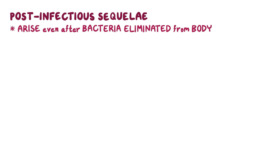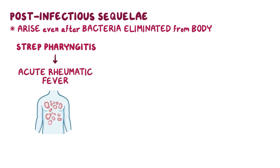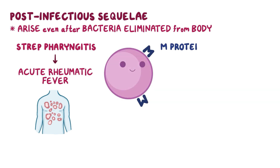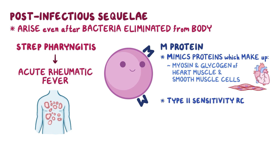Strep pyogenes can also cause post-infectious sequelae, which are complications that arise even after the bacteria has been eliminated from the body. For example, following strep pharyngitis, there might be acute rheumatic fever (ARF). This complication arises because strep pyogenes has a bacterial M protein that mimics the structure of some proteins in the body's tissues, like the myosin and glycogen of heart muscle and smooth muscle cells. They're similar enough for the immune system to confuse these self-structures with the bacterial M protein, resulting in a type 2 sensitivity reaction.